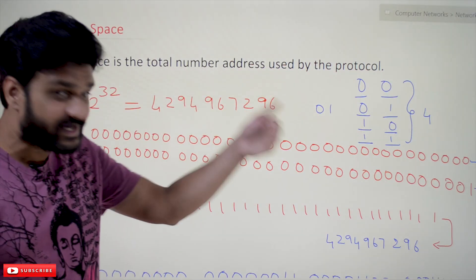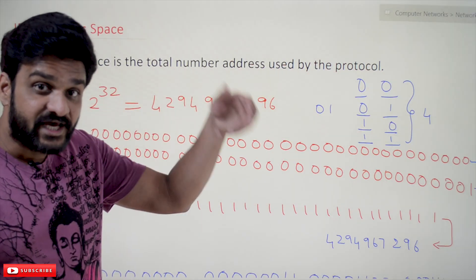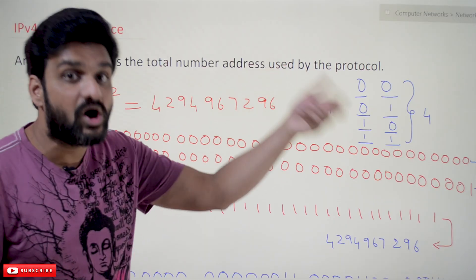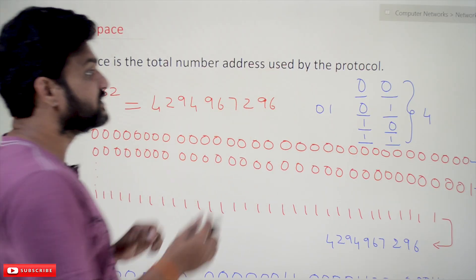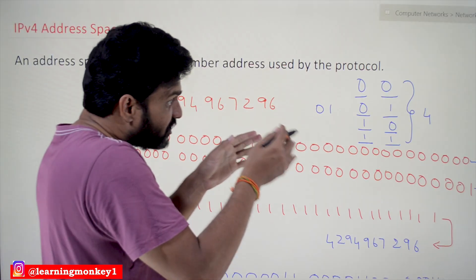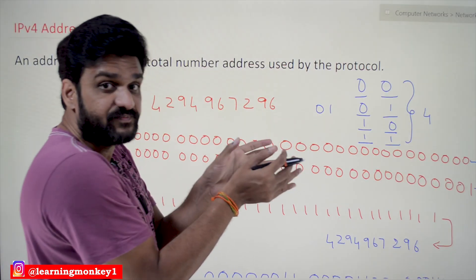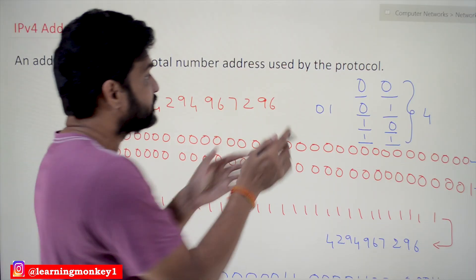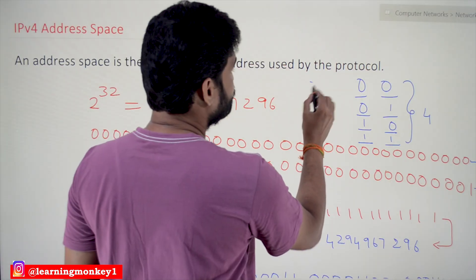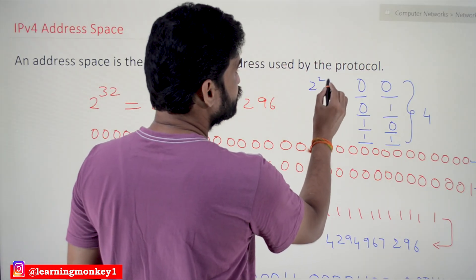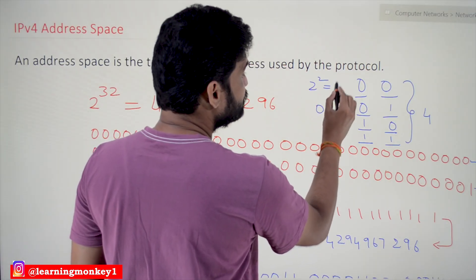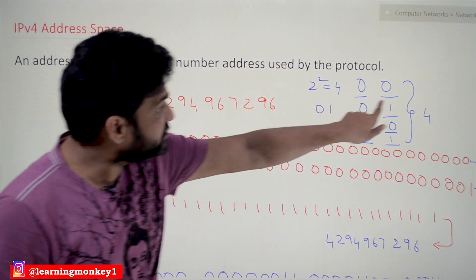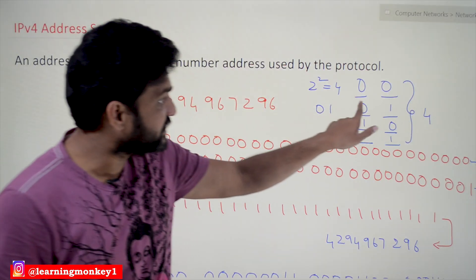So four addresses are possible with two bits. With two spaces where each can be either 0 or 1, the number of possible unique addresses is 2 to the power of 2, which equals 4. In the same way, with 32 spaces, the unique values possible are 2 to the power of 32.